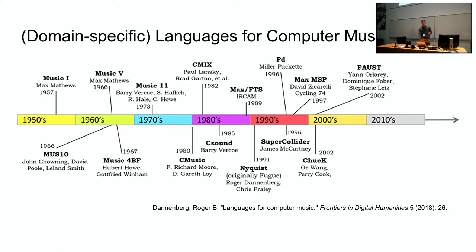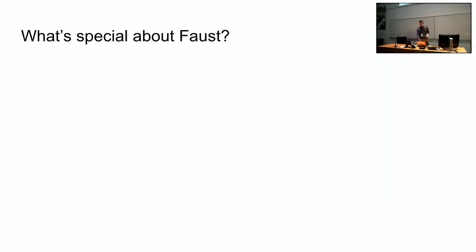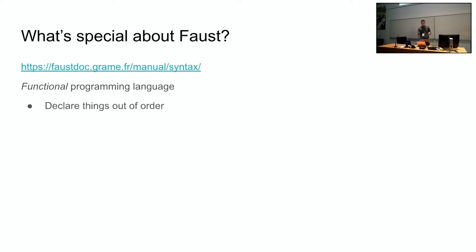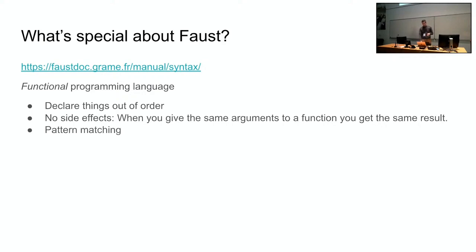But what makes Faust special? You can browse the syntax page and get a quick overview of Faust, but primarily it is a functional programming language and these kinds of languages have some usual characteristics. One thing is that you can declare things out of order, which is useful. There are also no side effects. When you give the same arguments to a function, you get the same result. And there's also pattern matching that's very common in functional programming languages.